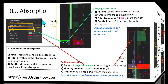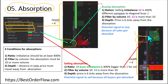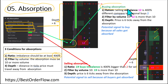Under section 5 we can select how to display absorption. This is the buying absorption and this is the selling absorption — there are actually two selling absorptions here. For absorption to be displayed on the chart, we need three conditions to be met. The first condition is the ratio: the imbalance should be at least 400 percent — not 210 but 400 percent in this example of buying absorption.